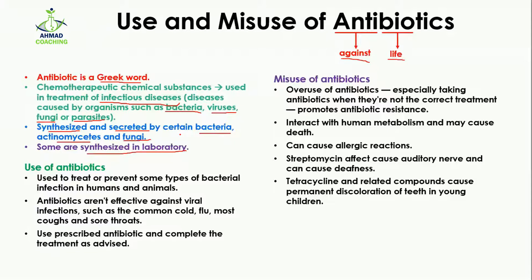What are the uses of antibiotics? Antibiotics are used to treat or prevent some types of bacterial infections in humans as well as in animals. If a person is suffering from a bacterial infection, a doctor can prescribe antibiotics, which will act on and kill the bacteria. As the number of bacterial cells in the body decreases, the person is going to recover.